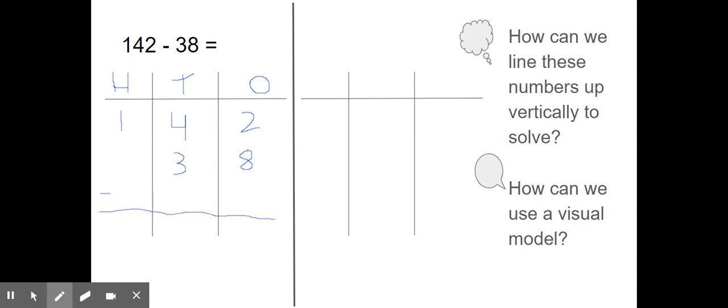Should I start by taking away hundreds, tens, or ones? If you said ones, you're right. Two ones minus eight ones. Can I do that? No, I can't take away eight from two. I don't have enough. What can I do? I can unbundle a 10 and change it into ones. So I'm going to cross out my tens. Instead of four tens, I'll now have three tens.